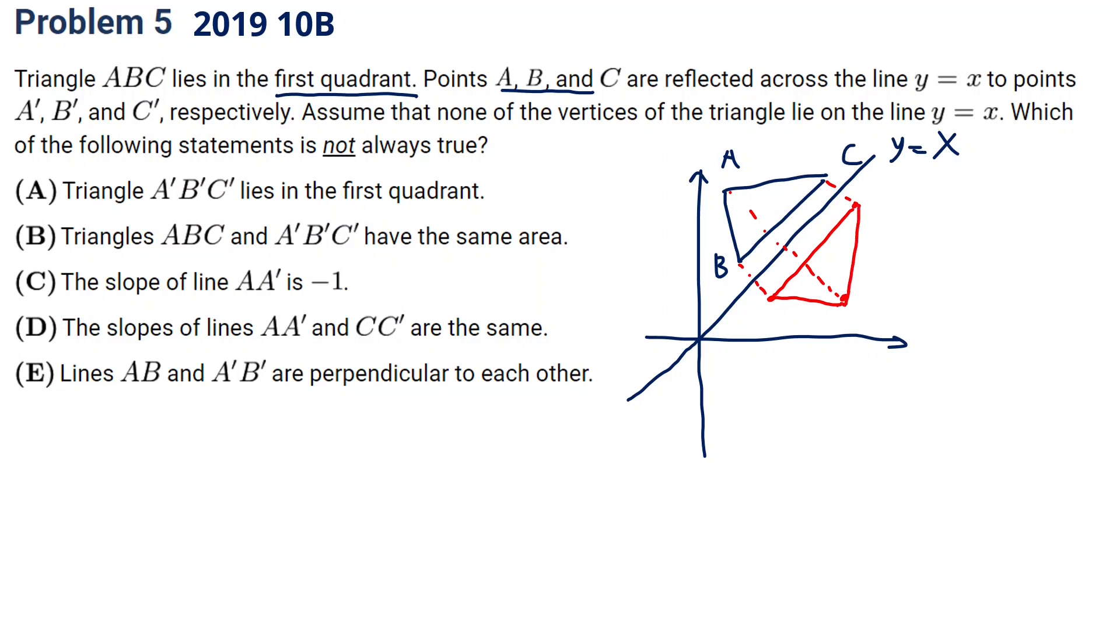Triangle A'B'C' lies in the first quadrant. Yes, true. Triangle ABC and A'B'C' have the same area. Yes. The slope of line AA' is negative 1, it's true. Because it's 1 and negative 1 as we can see. The slope of line AA' and CC' are the same, true, because they are all negative 1. And lastly, line AB and A'B' are perpendicular with each other. This is not necessarily true. As you can see, it's not. So the answer is E.